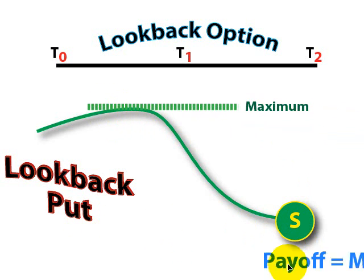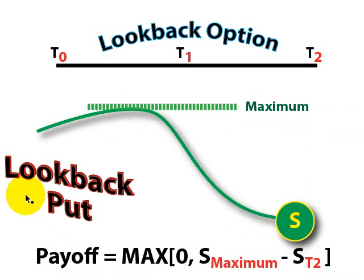The payoff to the holder of the European lookback put option is the maximum of zero or this difference: the stock price at its peak minus the stock price at T2 at exercise.